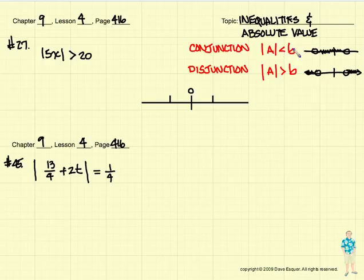So when we have this less than something, we're going to be talking about a conjunction. If we have this greater than symbol in this inequality absolute value, then we know we're going to be drawing a picture for a disjunction.